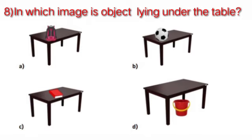Question number 8: In which image is the object lying under the table? According to option A, the object is on the table. In option B, the object is on the table. Even in option C, the object is on the table. But in option D, the object is lying under the table. So we will put a tick on option D.